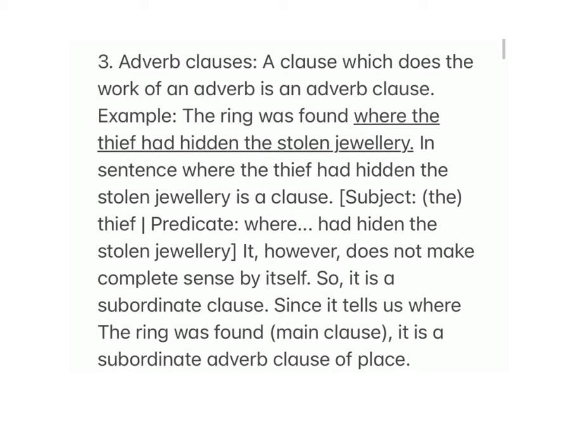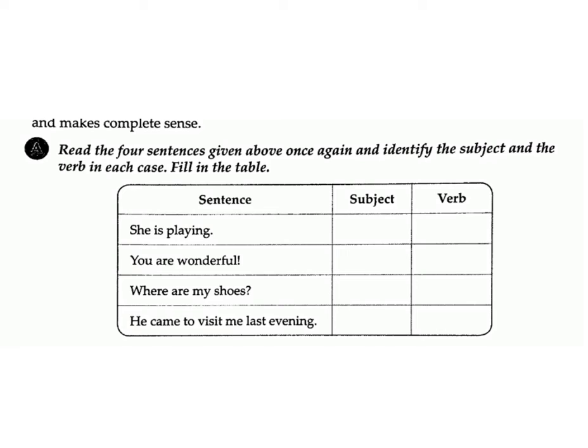Adverb clauses: A clause which does the work of an adverb is an adverb clause. Example: 'The ring was found where the thief had hidden the stolen jewelry.' In the sentence, 'where the thief had hidden the stolen jewelry' is a clause with subject 'the thief' and predicate 'where had hidden the stolen jewelry,' but it does not make complete sense by itself, so it is a subordinate clause. Since it tells us where the ring was found, it is a subordinate adverb clause of place.